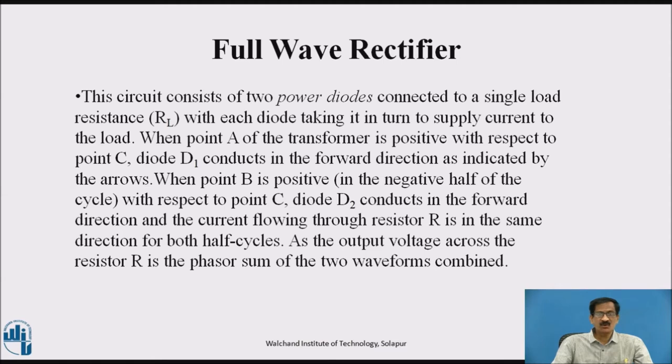This circuit consists of two power diodes connected to a single load resistance RL, with each diode taking it in turn to supply current to the load. When point A of the transformer is positive with respect to point C, diode D1 conducts in the forward direction. When point B is positive in the negative half cycle with respect to point C, diode D2 conducts in the forward direction, and the current flowing through resistor R is in the same direction for both half cycles, as the output voltage across resistor R is the phasor sum of the two waveforms obtained.